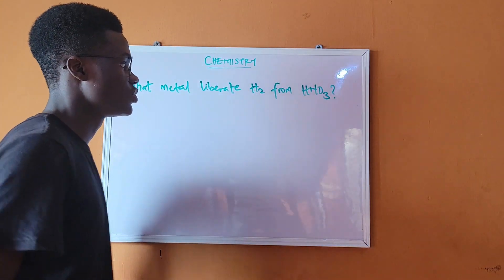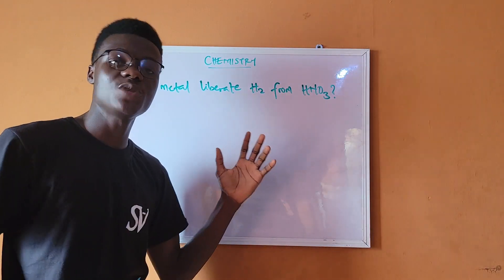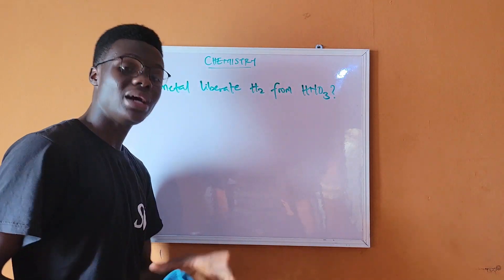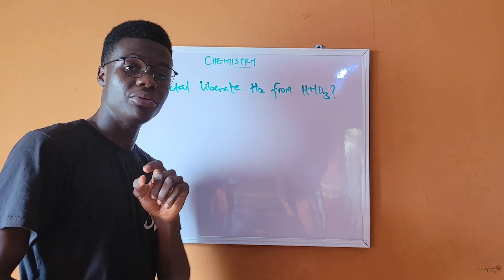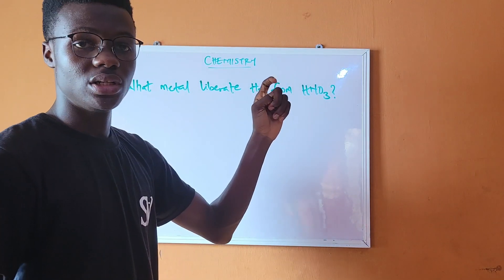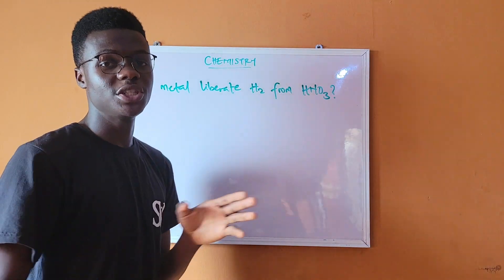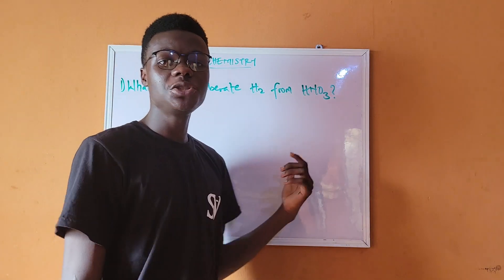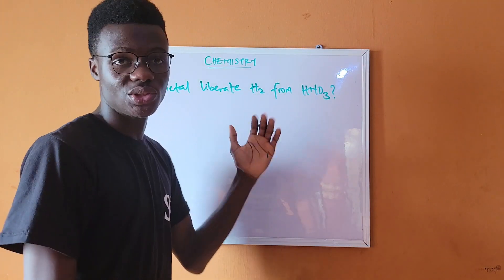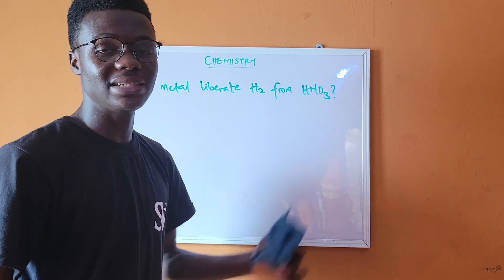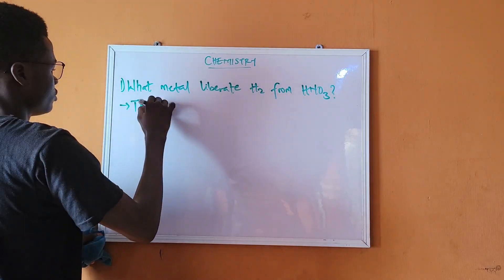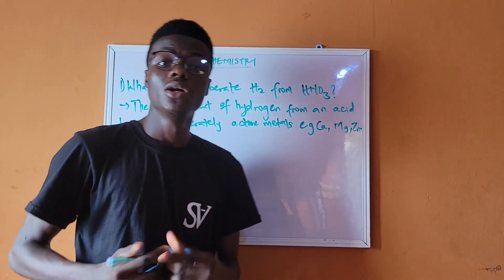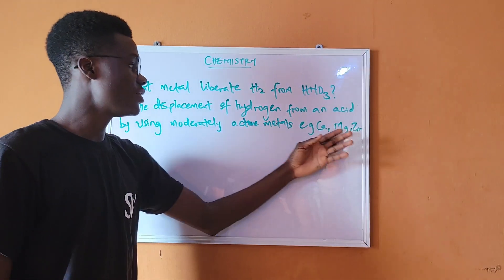The first question: one metal liberates H₂ from HNO₃. This is an aspect of chemistry called descriptive chemistry. To answer this, I'll take us back to the laboratory preparation of hydrogen — specifically the displacement of hydrogen from an acid by a metal.